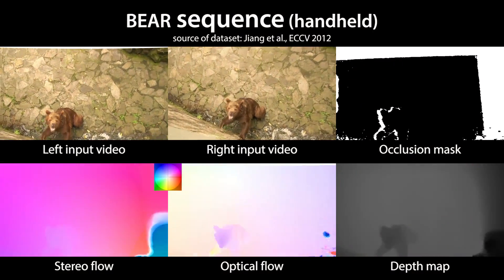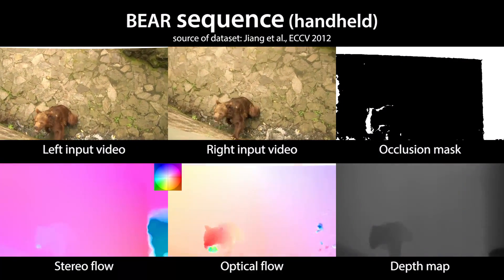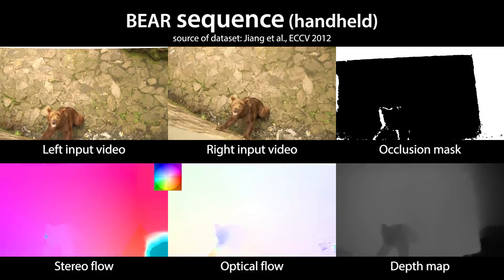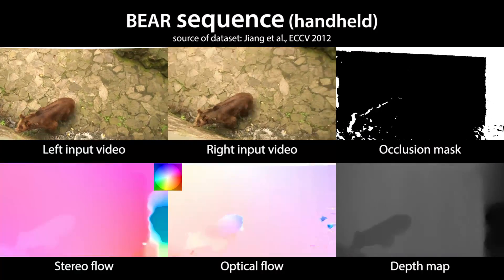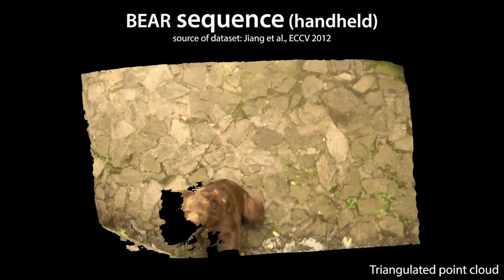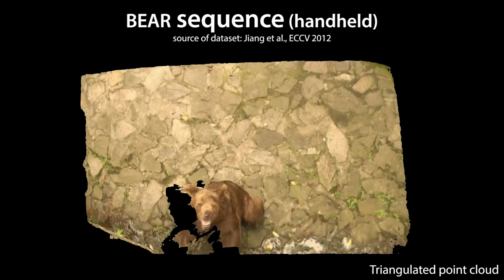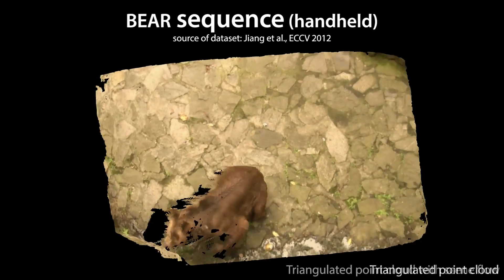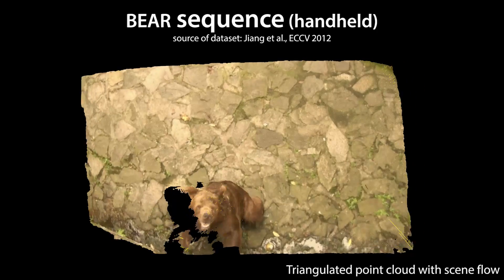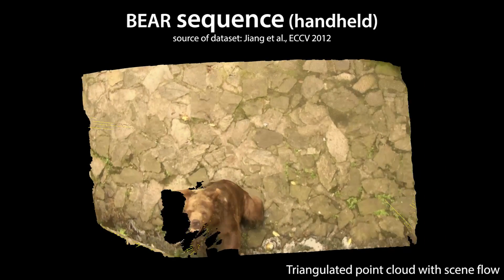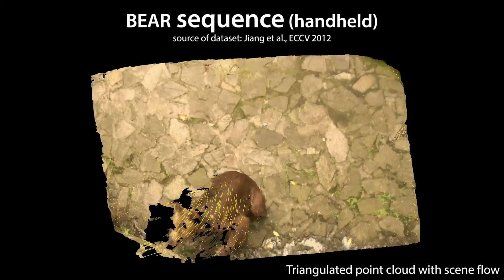Here we show another sequence with two handheld videos, as well as their computed flows, depth maps, and occlusion masks. The triangulated point clouds reconstruct the scene well, including parts of the difficult vertical wall that the bear is leaning on. The scene flow vectors clearly correspond to the motion of the bear, which is better visible in a close-up.